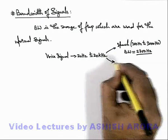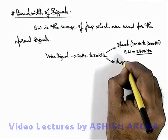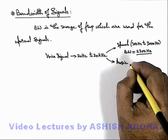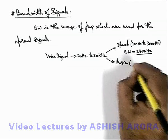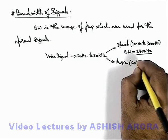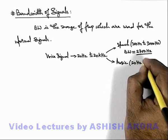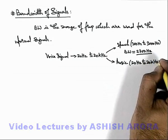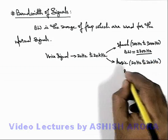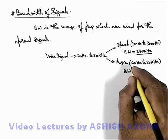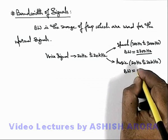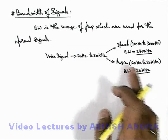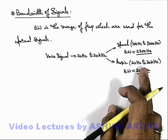And if we talk about a music signal, which contains a lot of harmonic frequencies of various musical instruments, it consumes the whole audible frequency range from 20 Hz to 20 kHz. Since 20 Hz is negligible compared to 20 kHz, the bandwidth for a music signal can be considered as approximately 20 kHz, as it is consuming the whole audible frequency range.